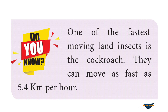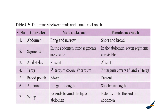Differences between male and female cockroach — important for board exams (5 marks) and NEET: The male abdomen is long and narrow with 9 visible segments; the female is short and broad with 7 visible segments. Anal styles are present in male, absent in female. The 7th tergum covers the 8th tergum in male, but covers the 8th and 9th in female. Brood pouch is absent in male, present in female. Antennae are longer in male. Wings extend beyond the abdomen tip in male, but only to the end of the abdomen in female.